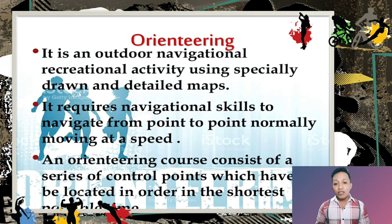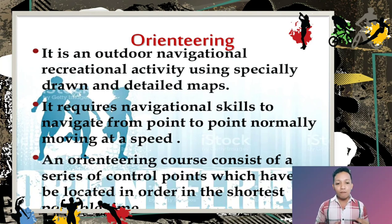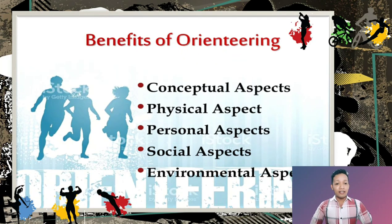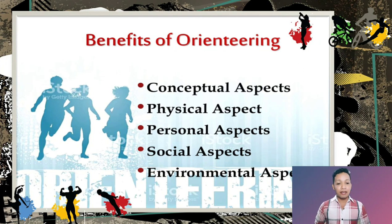Another outdoor activity is orienteering, which uses specially drawn and detailed maps. It requires navigational skills to move from point to point normally at speed. An orienteering course consists of a series of control points that must be located in order in the shortest possible time. The benefits of orienteering cover conceptual, physical, personal, social, and environmental aspects.